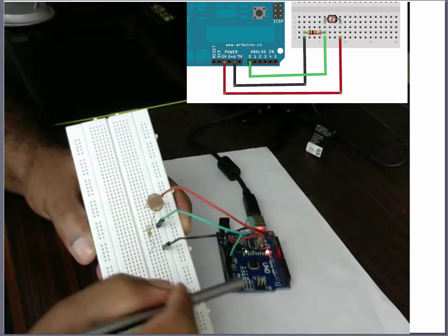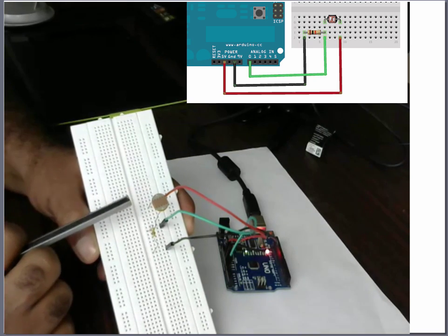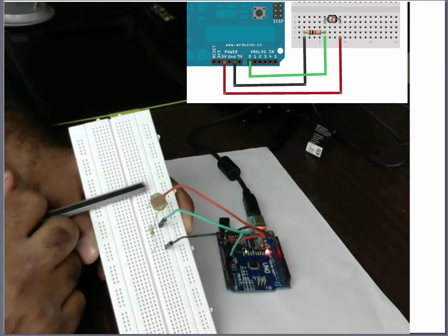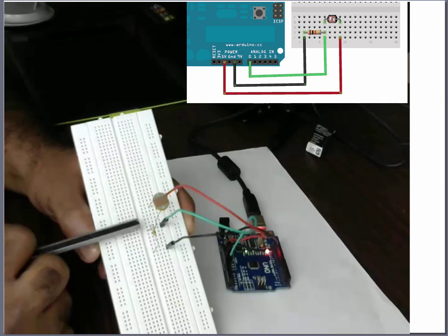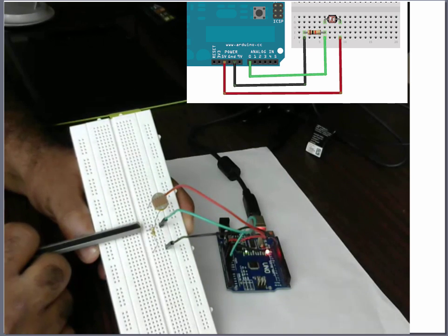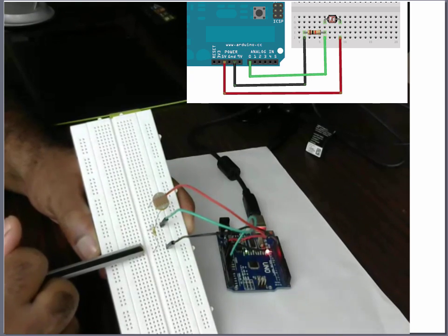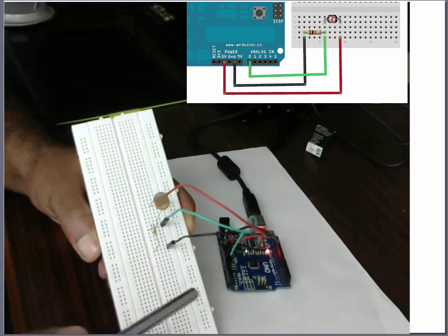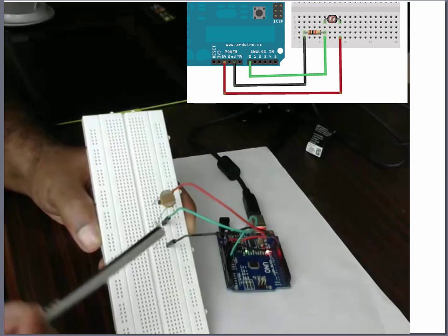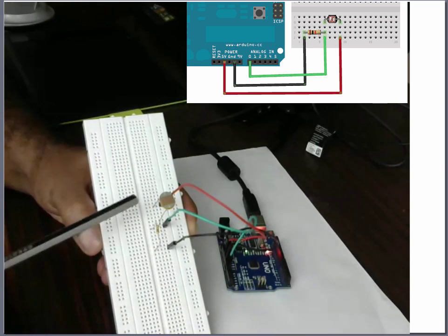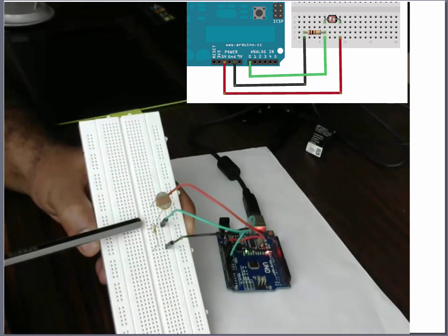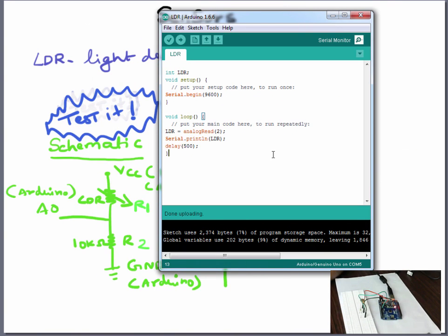The other end of the resistor is going to ground. So in other words we have one end of the photoresistor connected to 5 volts and the other end of the photoresistor is connected to the ground via a 10 kilo ohms resistor. And the voltage dividing point or the analog measurement point is right between where the resistor meets this LDR.